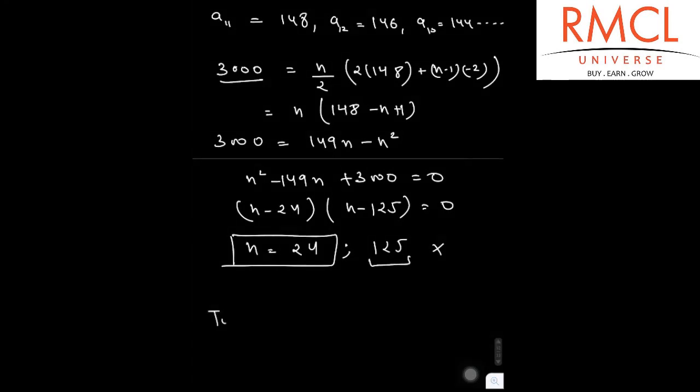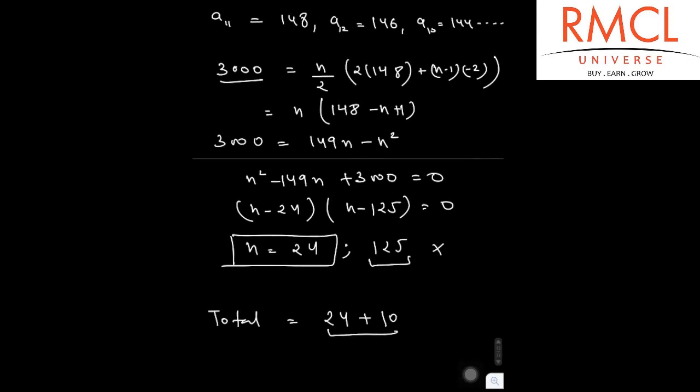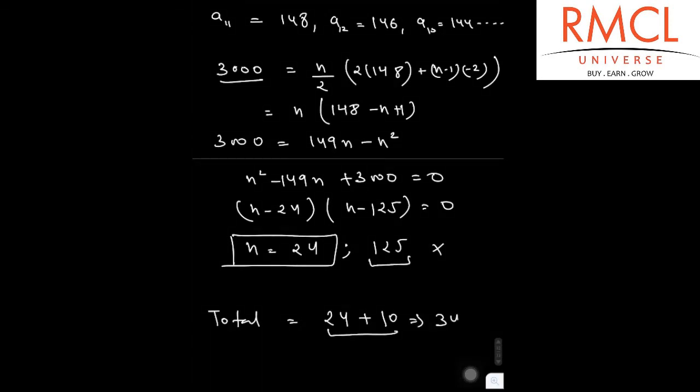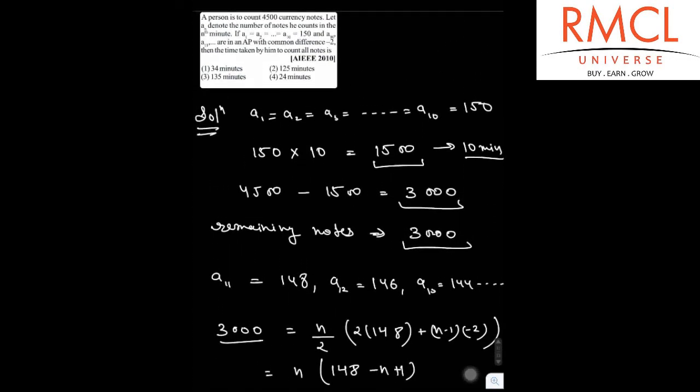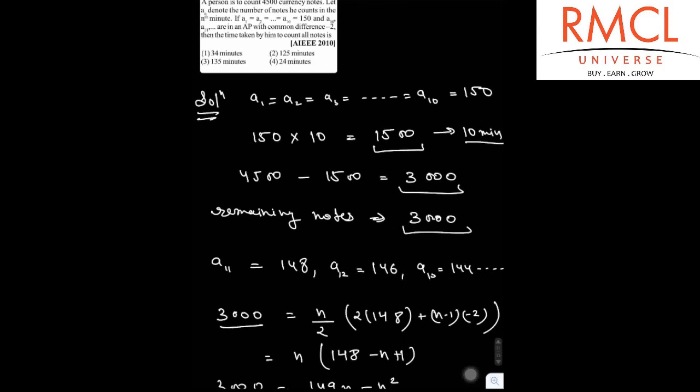So total time, which is 24 plus 10, so this is 34 minutes. So 34 minutes will be taken by the man to count all the currency notes. So option number one is correct.